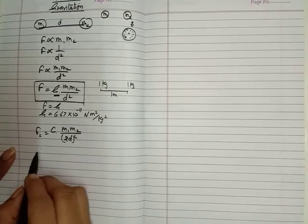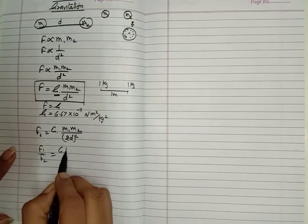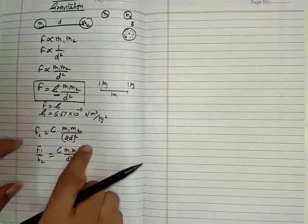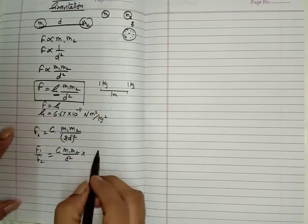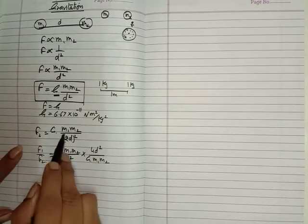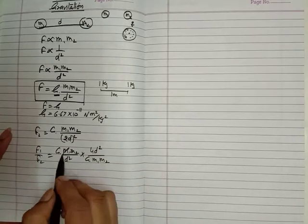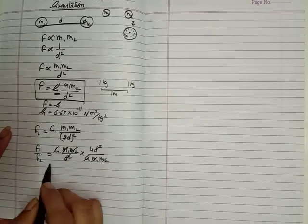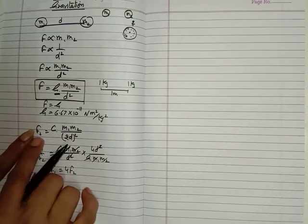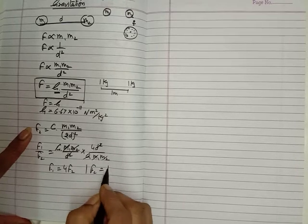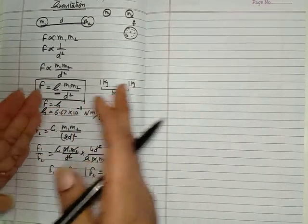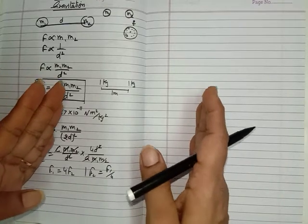This is equation 1, this is equation 2, and if we divide the equations - we know that to divide you reciprocal the denominator, giving 4d square upon G m1 m2. We are not changing the mass of the objects, only the distance. So G cancels with G, d square cancels with d square, giving F1 upon F2 equals 4, meaning F1 equals 4 F2, or F2 equals F1 upon 4. It means the force becomes one-fourth. If we double the distance between the two objects, the force of attraction becomes one-fourth.